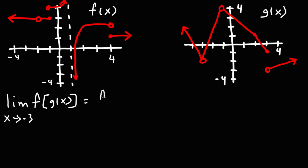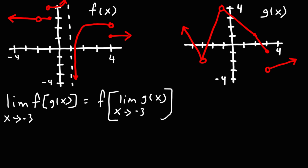This expression is equivalent to what I'm about to write here. We have f, and then we're going to take the limit as x approaches negative 3 of the function g of x. So g of x is the graph on the right side. Here is an x value of negative 3. If we approach from the left side, notice that g will gain a y value of negative 2. And the same is true if we approach from the right side — from either side, it's going to be negative 2.